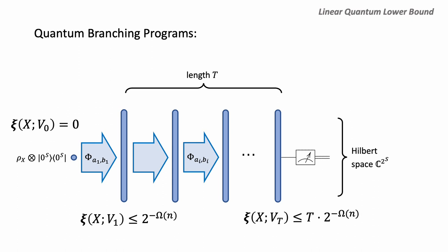Starting with zero dependence, by the previous lemma the dependence increases by an exponentially small amount at each step. Using triangle inequality, the final dependence at stage T is at most T times 2^{-n}. So as long as T is small, the learning algorithm learns very little about x and cannot even guess the single-bit information about x correctly.